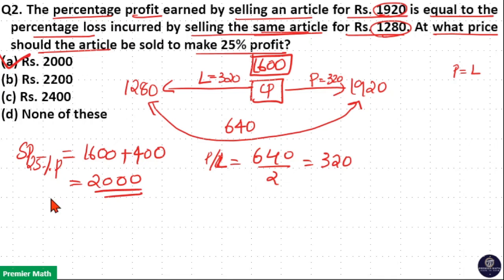Option A is your answer. Here 25 percentage of 1600 is 1 by 4 of 1600, which is equal to 400.